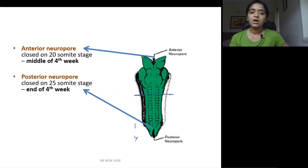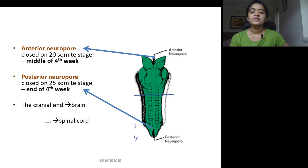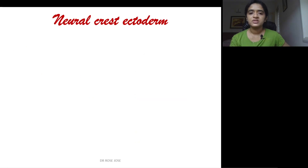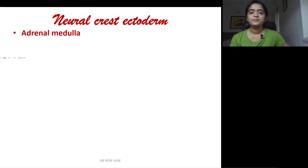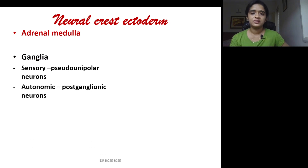The posterior neuropore closes at the 25-somite stage, or by the end of the fourth week. These closure timings are important to remember. The cranial end of the neural tube gives rise to the brain, and the caudal end forms the spinal cord.